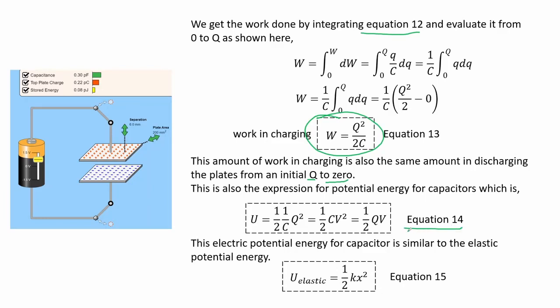The electric potential energy for a capacitor is analogous to elastic potential energy as shown by equation 15. The capacitance plays the role of a spring constant, and the charge Q is analogous to the elongation X of an elastic material. The potential energy for a capacitor depends on its physical characteristics, so we can increase the charge stored by increasing its capacitance C.